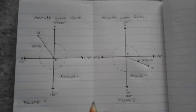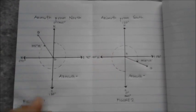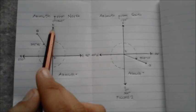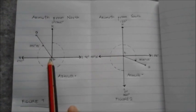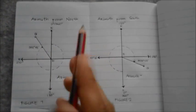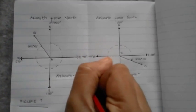In this diagram, the figure 1, we will see that the angle is measured from the north branch of the reference meridian to the line VA. The azimuth from north of line VA is 342 degrees and 48 minutes.